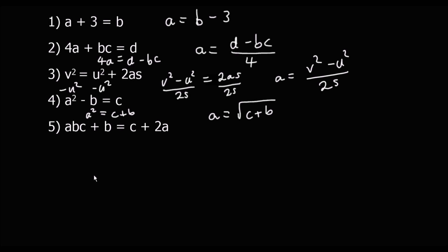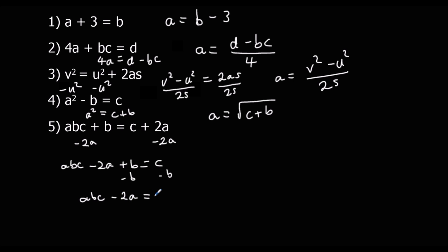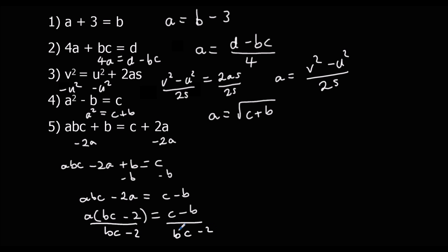For the harder example, we need to get the two A's on the same side and everything else on the other side. I'm going to take away 2A, which removes it from one side, leaving ABC minus 2A plus B equals C. Then I take B off to get everything away from the A terms, giving ABC minus 2A equals C minus B. I want to get the A's out so I'm going to factorize: A times BC makes ABC, and A times minus 2 makes minus 2A, giving A(BC minus 2) equals C minus B. Then I divide both sides by (BC minus 2), so A equals C minus B over BC minus 2. That's the final answer.